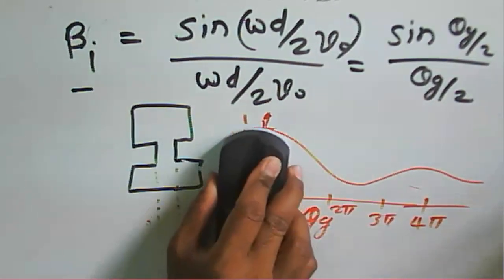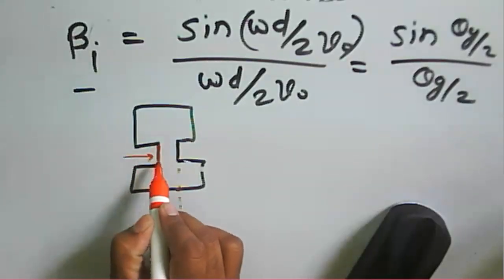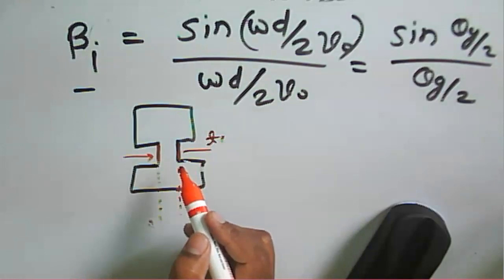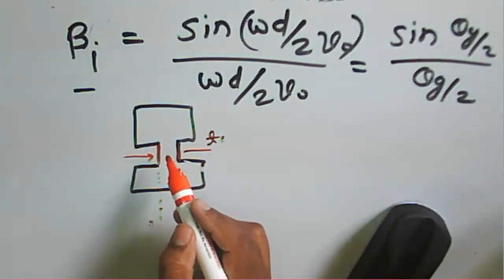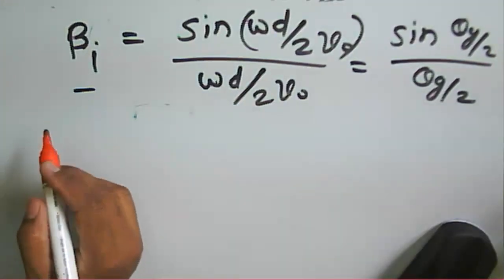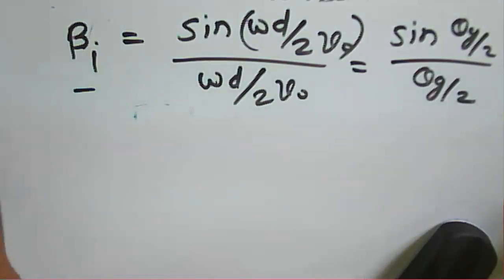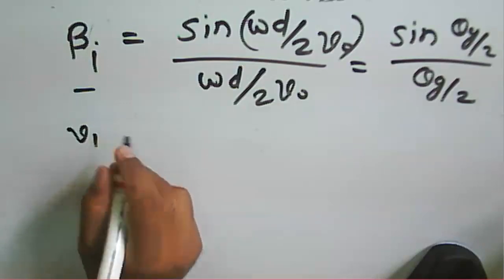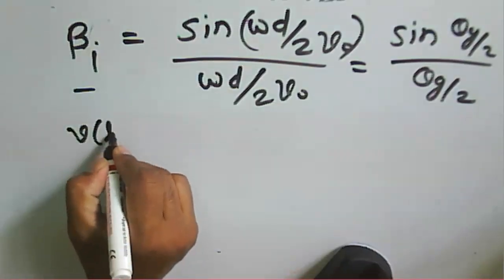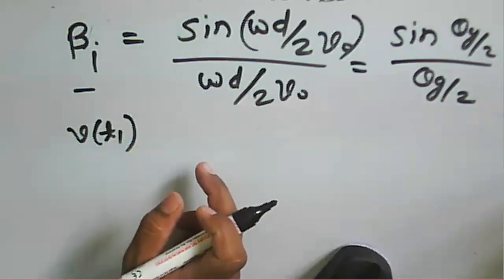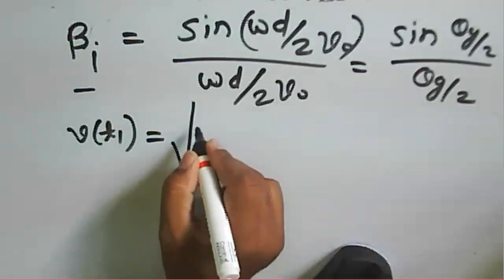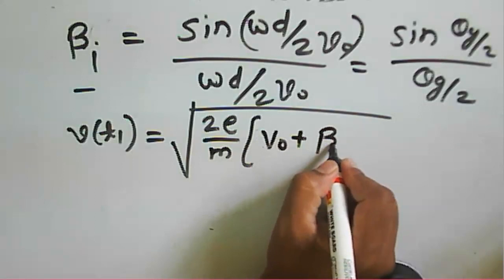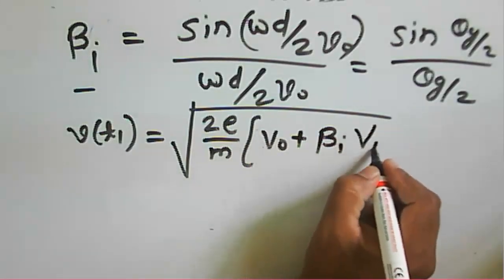Electrons enter the buncher gap at time t0 and leave at time t1. The exit velocity from the buncher gap is given by v(t1), which depends on the charge-to-mass ratio (e/m). Our aim is to find the exit velocity of the electron at time t1.